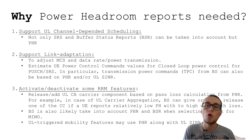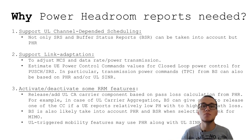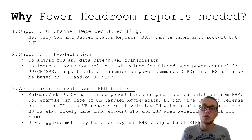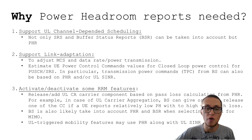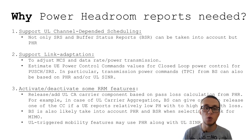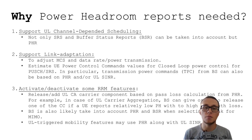Power headroom can be used to support link adaptation — for example, to reduce modulation and coding scheme or number of allocated PRBs in order to optimize uplink transmission and battery consumption. Power headroom reports can even be used to calculate transmission power commands from the base station to the user equipment, based not only on uplink signal-to-noise interference ratio but also on power headroom values from the UE.